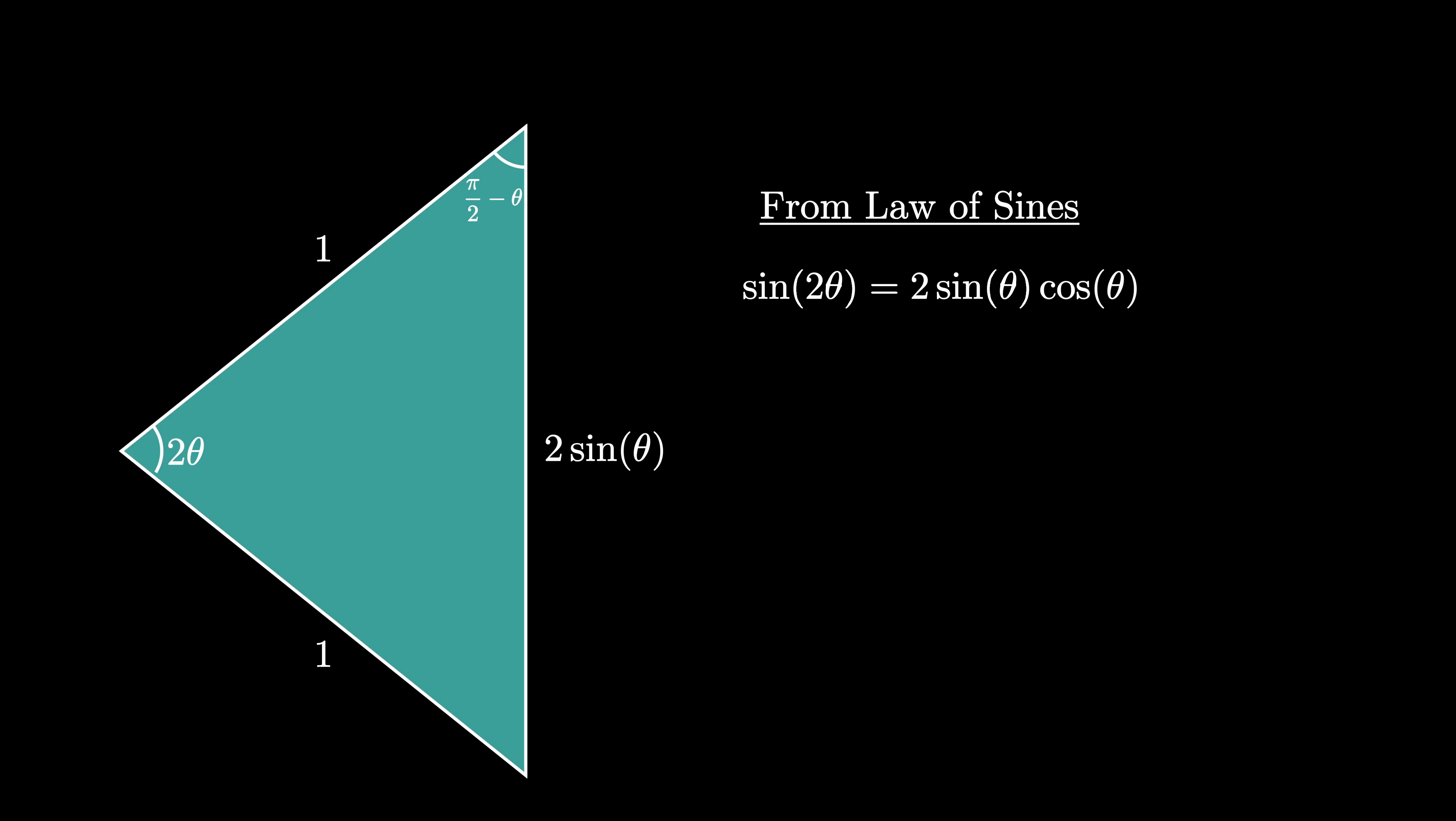Now let's apply the Law of Cosines to the triangle pictured. From the Law of Cosines, we see that 2 times the sine of theta squared equals 1 squared plus 1 squared minus 2 times 1 times 1 times the cosine of 2 theta.